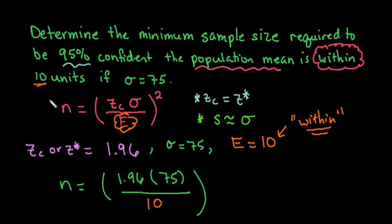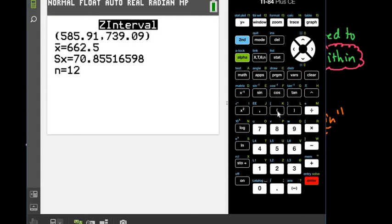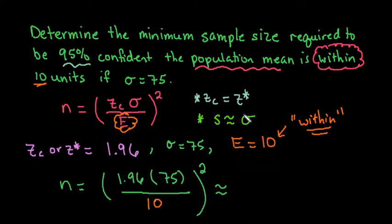This E we replace with whatever it says 'within,' so since it says within 10 units, we replace it with 10. We have to remember to square this value. I'm going to use the TI-84. Open parentheses, type 1.96 times 75, divided by 10, close parentheses, then square. Make sure the whole thing is in parentheses before squaring. Hit enter, and you get 216.09.